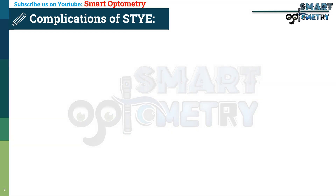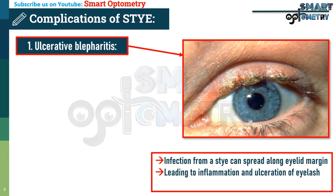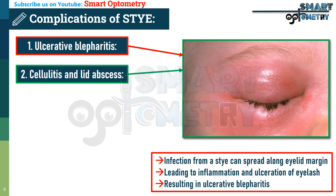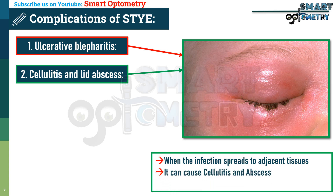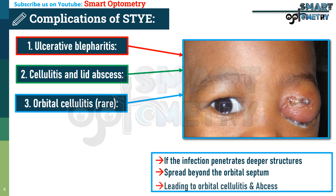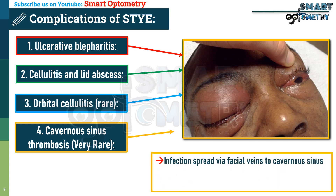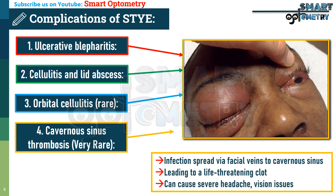The complications of external hordeolum include: first, ulcerative blepharitis — infection from a stye can spread along the eyelid margin, leading to inflammation and ulceration of eyelash follicles and surrounding skin. Second, cellulitis and lid abscess — when infection spreads to adjacent tissues, it causes diffuse inflammation or a pus-filled abscess with severe swelling and pain. Third, orbital cellulitis (rare) — if infection penetrates deeper, it can spread beyond the orbital septum, causing painful swelling, redness, and potentially impaired eye movement. Fourth, cavernous sinus thrombosis (very rare) — in extreme cases, infection may spread via facial veins to the cavernous sinus, leading to a life-threatening clot causing severe headache, vision issues, and neurological deficits.